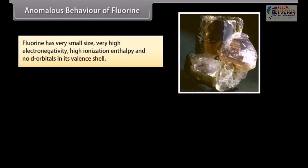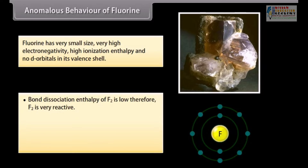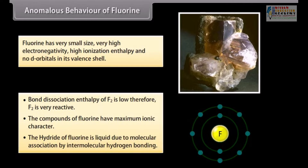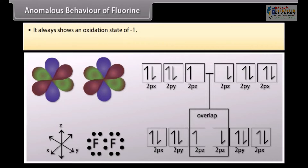Fluorine has very small size, very high electronegativity, high ionization enthalpy and no d-orbitals in its valence shell, and exhibits some different behavior from other halogens. Bond dissociation enthalpy of F₂ is low; therefore F₂ is very reactive. The compounds of fluorine have maximum ionic character. The hydride of fluorine is liquid due to molecular association by intermolecular hydrogen bonding. It always shows an oxidation state of −1 and does not form polyhalide ions due to the absence of d-orbitals.